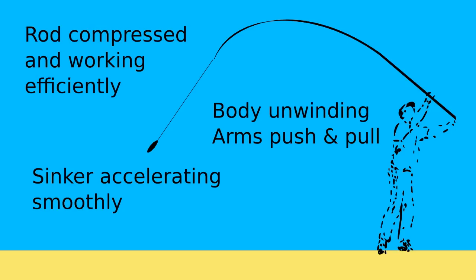Your arms automatically move into the correct position to push and pull. The rod's nicely loaded, the sinker's on the right path and it's moving quickly. Flick the rod over smoothly and firmly. Take your time. Pull a little harder with the left hand than you push with the right.